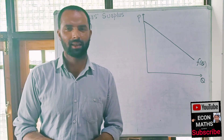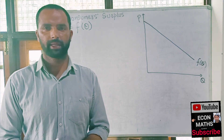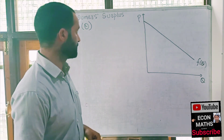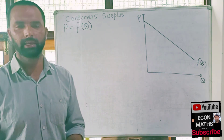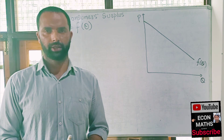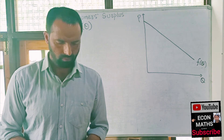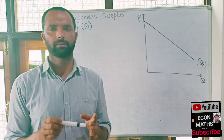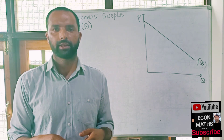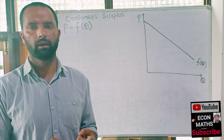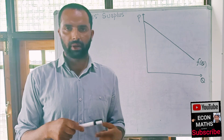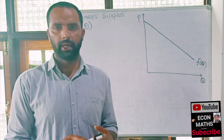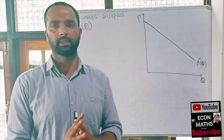Hi, this is Halal. In this video on mathematical economical series, we will discuss about the consumer surplus and producer surplus, and their mathematical derivations. Consumer surplus, as we know, is the difference between the prices that the consumers are willing to pay and the prices that they actually pay.